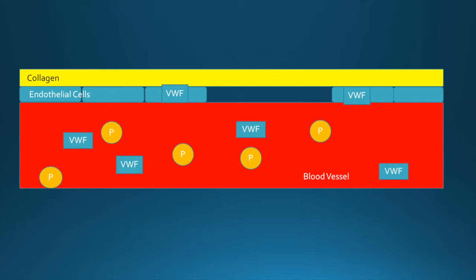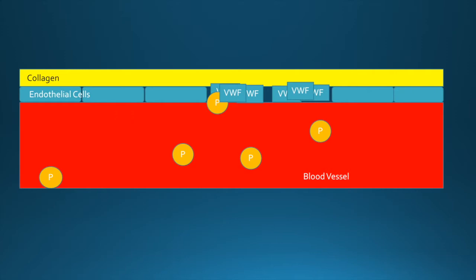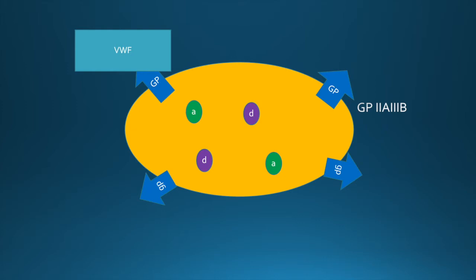As a result, von Willebrand factor binds tightly to collagen, causing platelets to bind and therefore become activated. Now let's take a look at the general structure of a platelet.